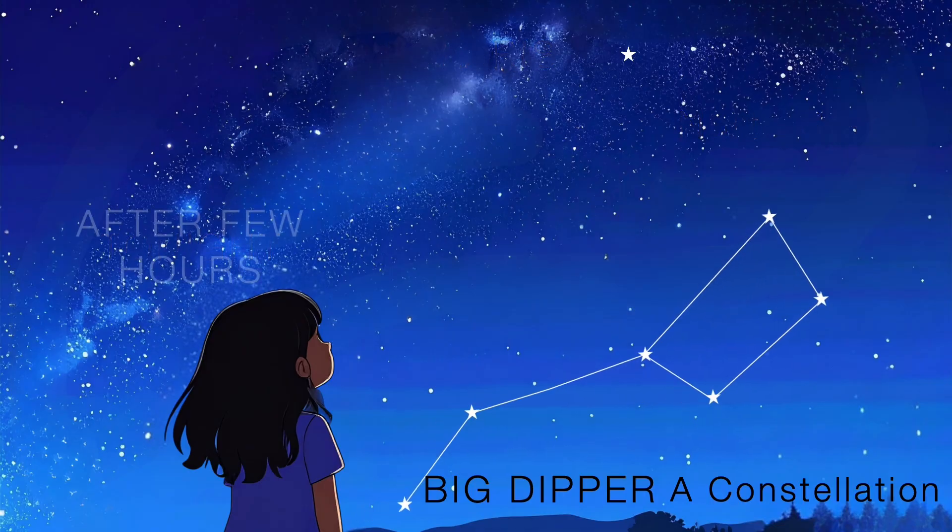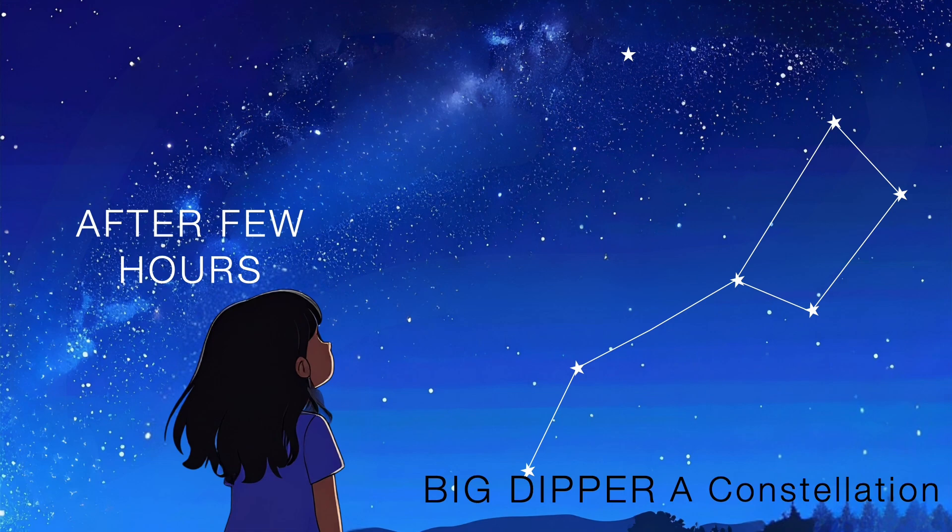What is interesting is that because of the rotation of the Earth, after a few hours you can see that the Big Dipper has moved its position around the pole star or the Polaris or the North star. Due to the rotation of the Earth, all the stars in the sky as we see from here revolve or rotate around this one star called the northern star.